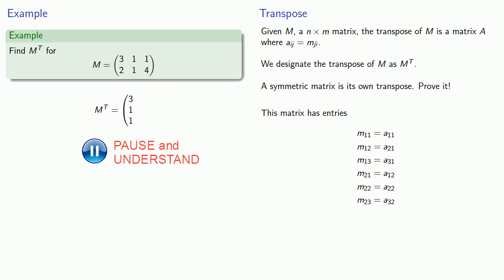Likewise, M21, M22, and M23, the entries in our second row, will become A12, A22, A32, the entries in our second column.